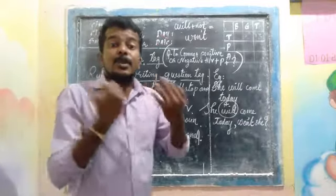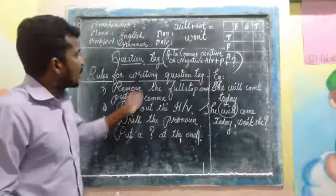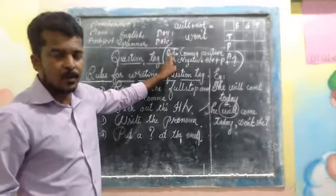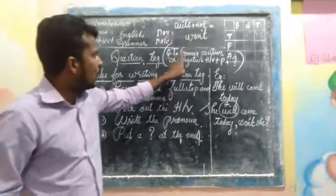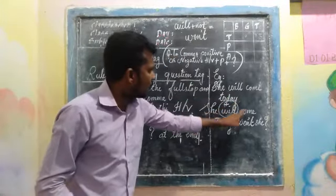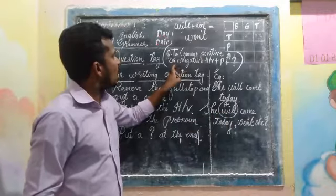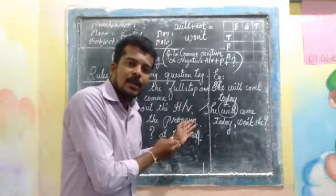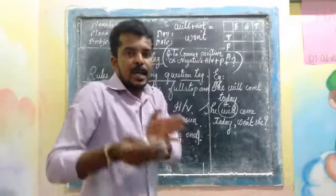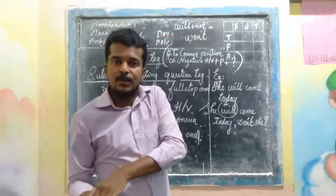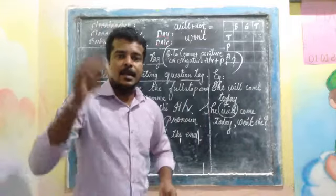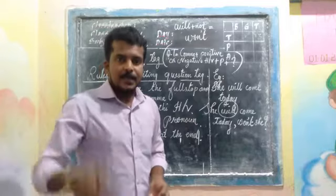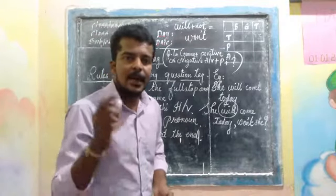In short, I made a small formula to remember these four rules. Question tag (QT) equals: first, change the full stop to a comma; plus, positive or negative helping word — if the sentence is positive, the tag will be negative; if the sentence is negative, the tag will be positive, and vice versa.